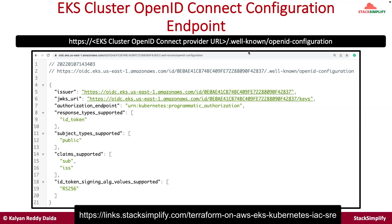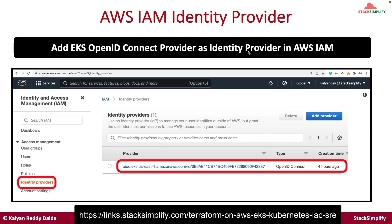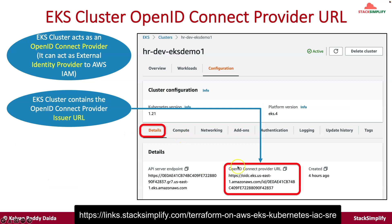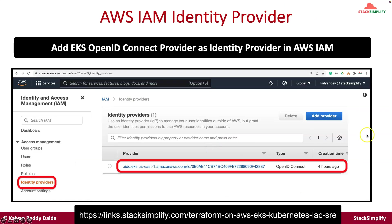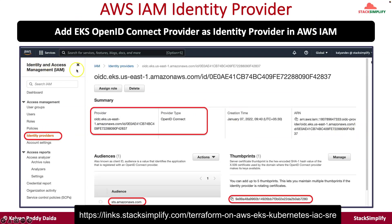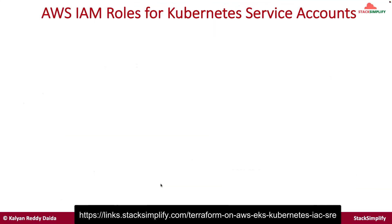If you go to Identity and Access Management in AWS IAM, you will have an option called identity providers. Here you are going to configure the OpenID Connect provider URL. At that point, identities from the EKS cluster can be accepted to access the AWS services. Once the identity provider is configured, you can see the provider information and also the audience, which is sts.amazonaws.com — the AWS Security Token Service.